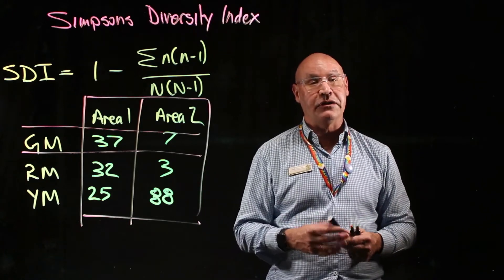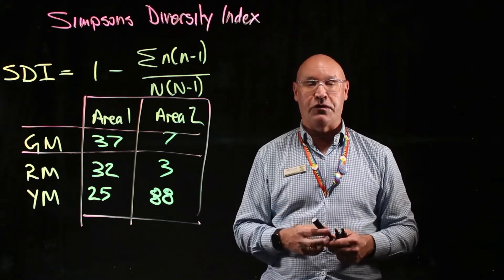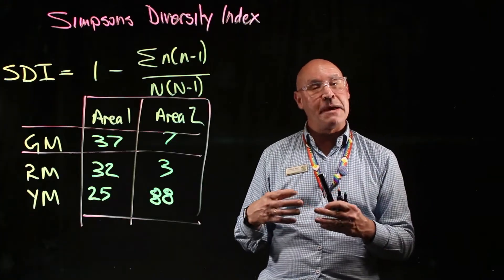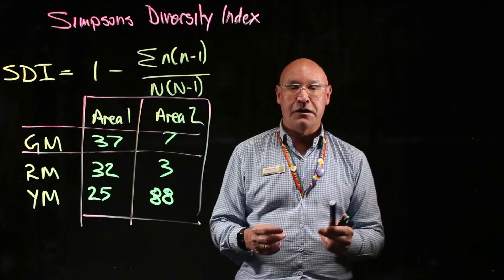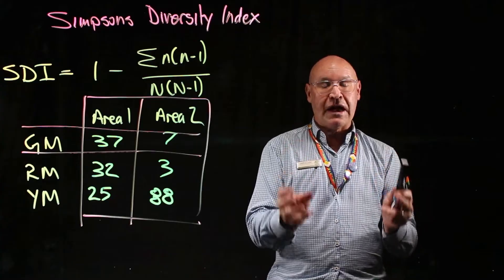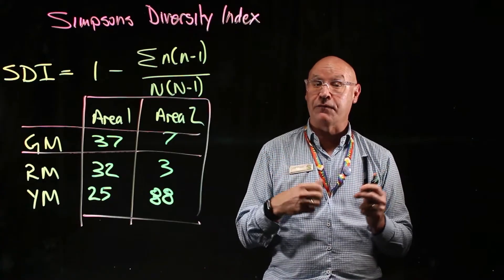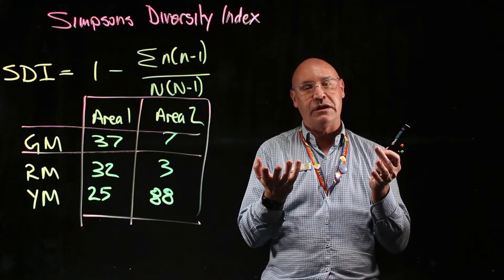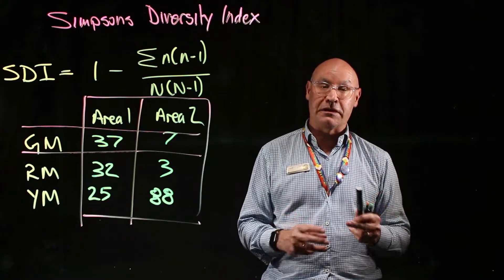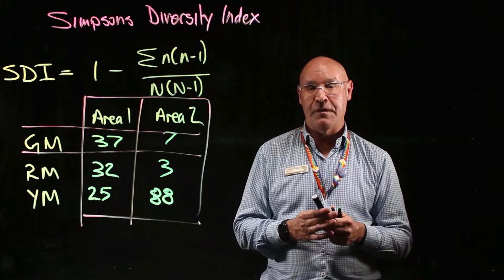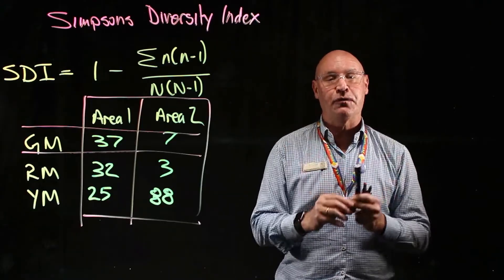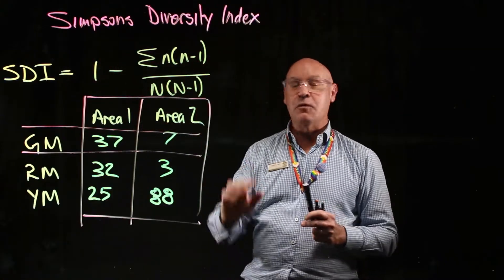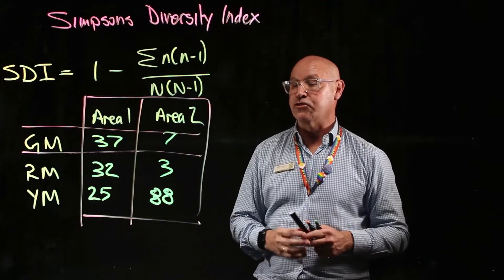Simpson's Diversity Index is a measure of biodiversity. More specifically, it's a measure of the probability that two organisms sampled from a community are of different species. So the higher the biodiversity, the higher the probability that there'll be different species. I'll write down that definition, then we'll talk through the formula, and then we'll work through doing an actual calculation.